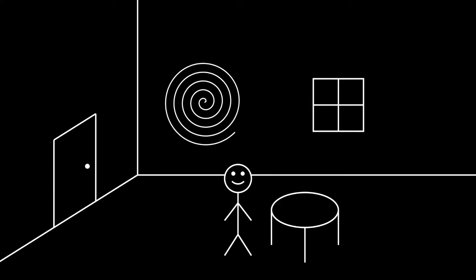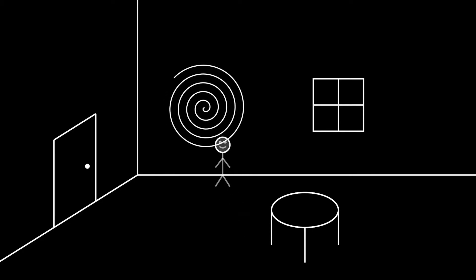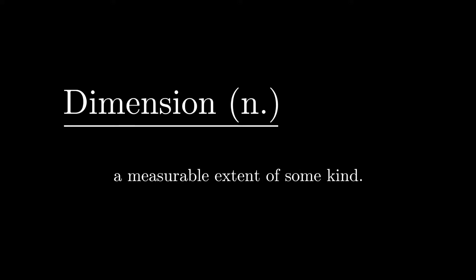But I want to give you some intuition about how to view the word dimension and ultimately give us a visualization of the fourth dimension. Just so we're on the same page here, let's go over the definition of dimension. It's easy to understand, it's simply just a measurable extent of some kind.